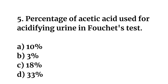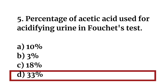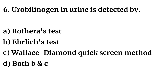Question number five: Percentage of acetic acid used for acidifying urine in Fouchet's test. Option A: 10%. Option B: 3%. Option C: 18%. Option D: 33%. The right answer is Option D: 33% acetic acid is used for acidifying urine in Fouchet's test.